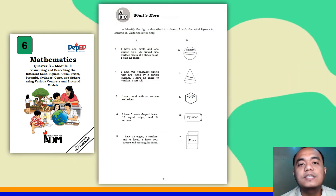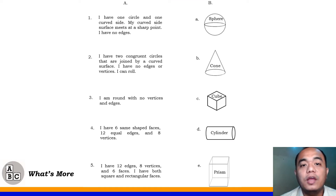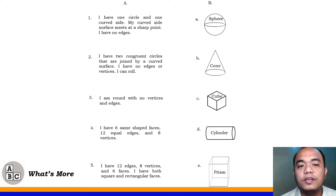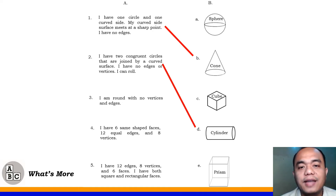Let's have the What's More part of your module, found on page 21. Identify the figure described in column A with the solid figure in column B. Number 1: I have one circle and one curved side. My curved side surface meets at a sharp point. I have no edges. The answer is cone. Number 2: I have two congruent circles joined by a curved surface. I have no edges or vertices. I can roll. That's a cylinder.